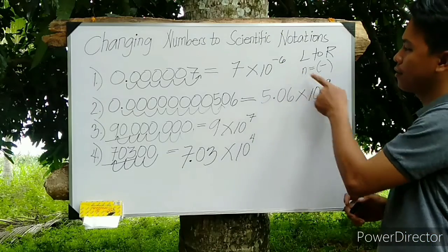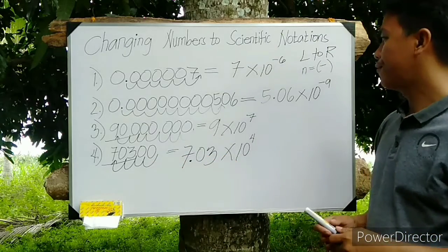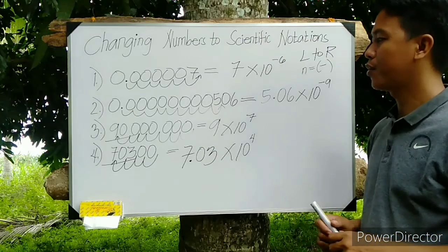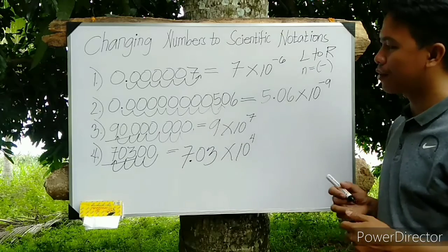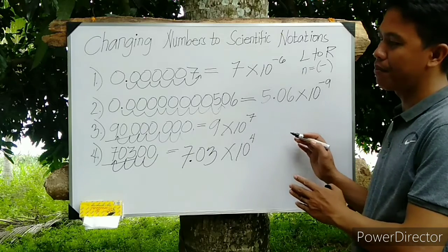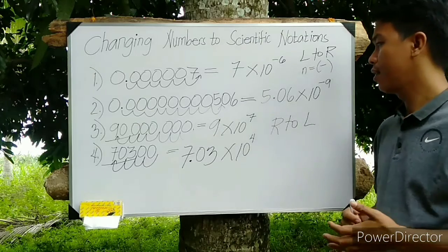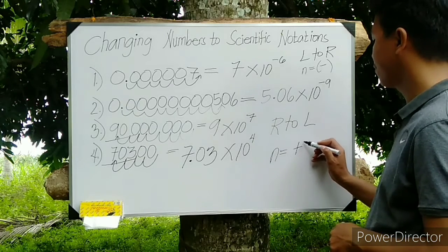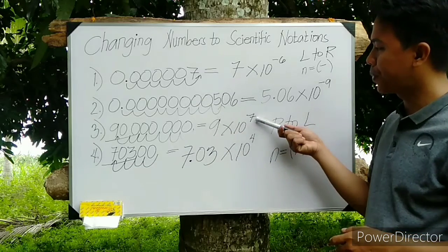While in number 3 and 4, the first reason is the numbers are large numbers, which means they are more than 1. The second reason is the movement is coming from right to left. And number 3, the powers are positive integers. As you can see, in number 3 and 4, the powers are positive integers.